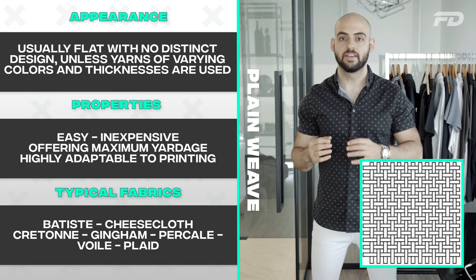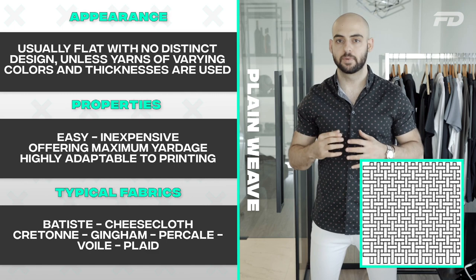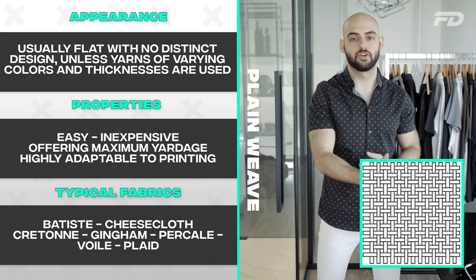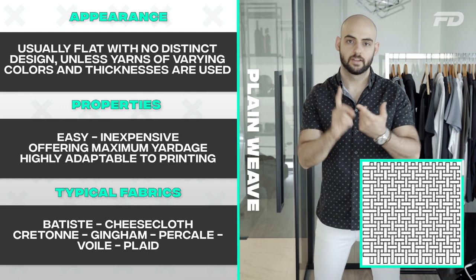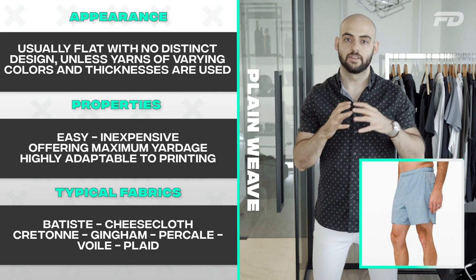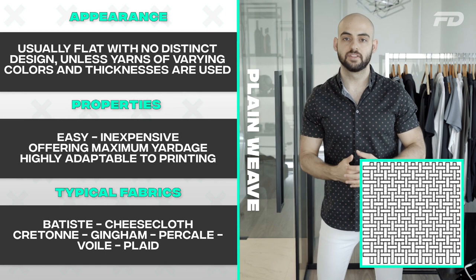You can use different colored yarns and yarns with different thicknesses to create ribbing effects, but a standard weave is the most basic and most efficient type, giving you maximum durability for the least amount of cost. It's extremely easy and inexpensive to produce, yarn count typically determines the durability, and it's efficient in its usage of yarns. Common fabrics using the plain weave structure include batiste, cheesecloth, crepe, gingham, prickle, wool, and plaid.